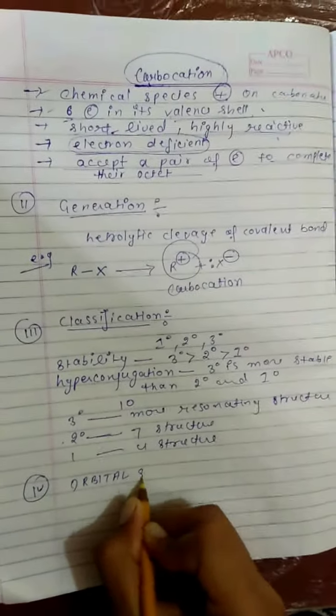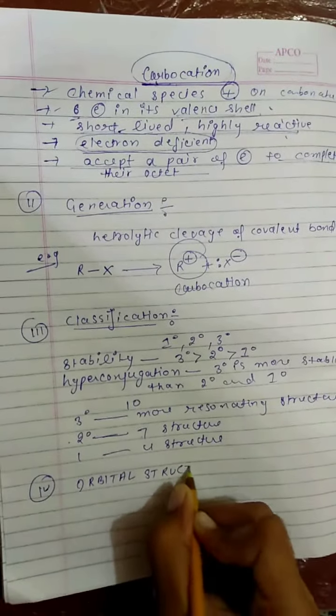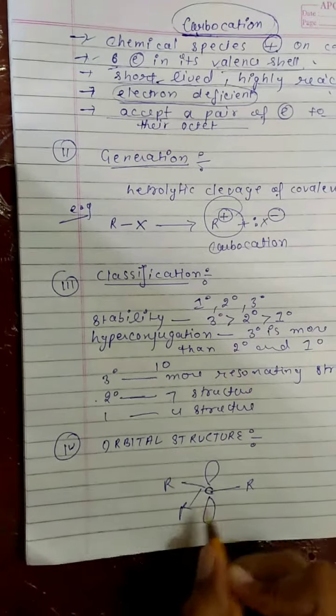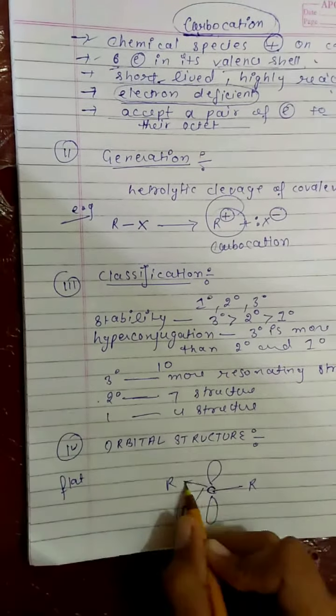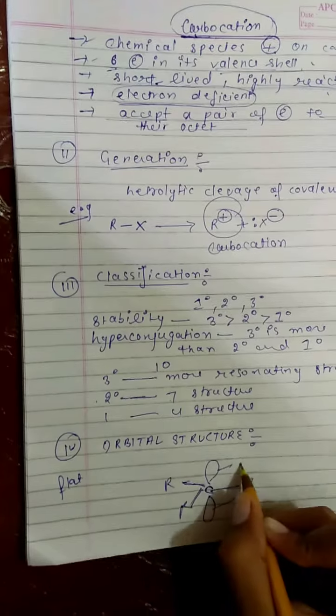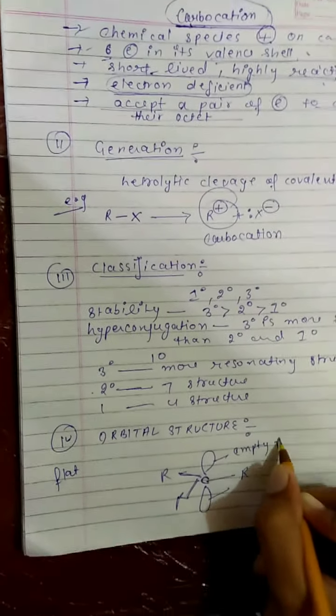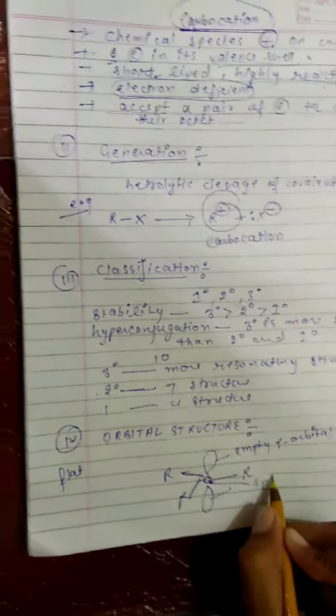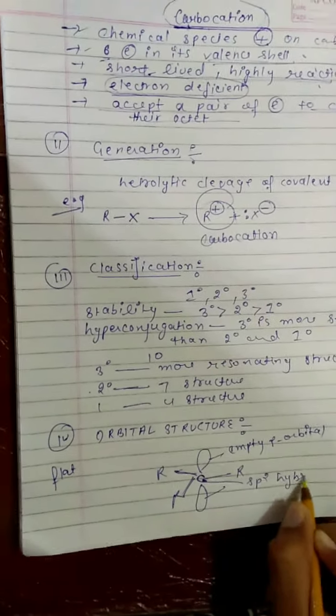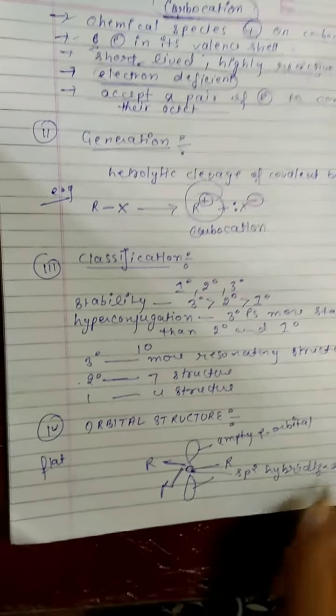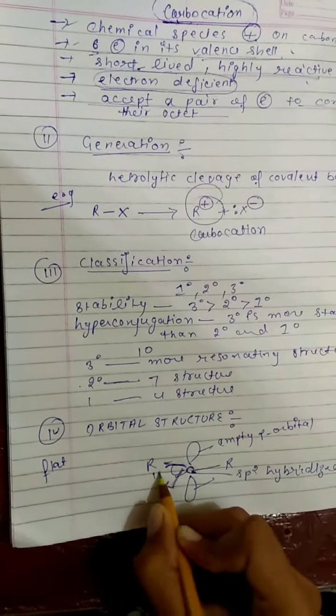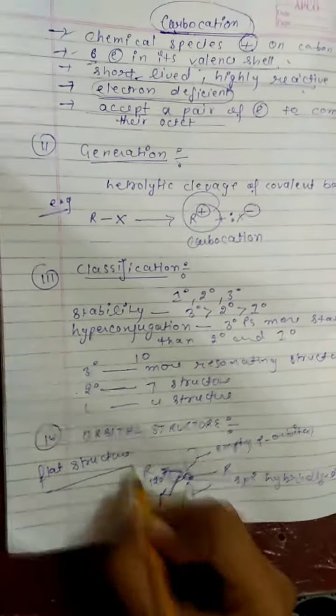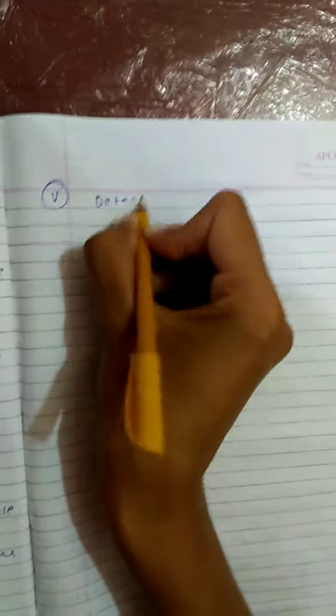Now the orbital structure of carbocation. Carbocation has flat structure. In its flat structure, carbon atom has three covalent bonds and one empty p orbital. In this carbocation, carbon is sp2 hybridized. The angle between two covalent bonds is 120 degrees and it's a flat structure.